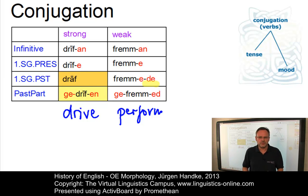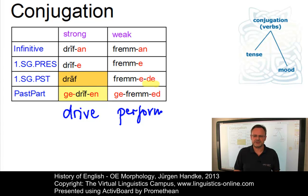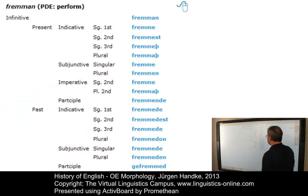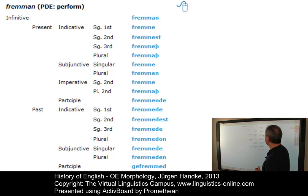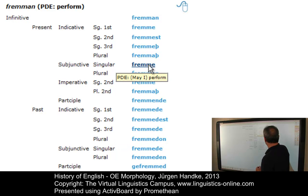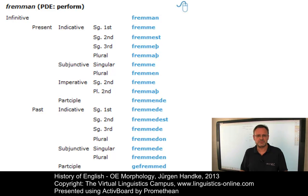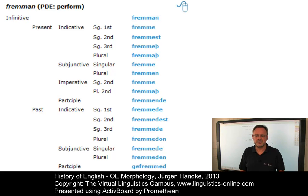Fused with the system of tense and mood was the conjugation for person and number, which was far more elaborate than in later versions of English. It doesn't make sense to show all forms in an e-lecture of this kind. In the VLC unit, you have access to several interactive examples. Here you see one of the screens where the verbal paradigm — in this case of 'fremman' — is represented. Move the cursor over the forms and you get more information. You have access to several paradigms on the Virtual Linguistics Campus in the e-learning unit Old English Morphology.